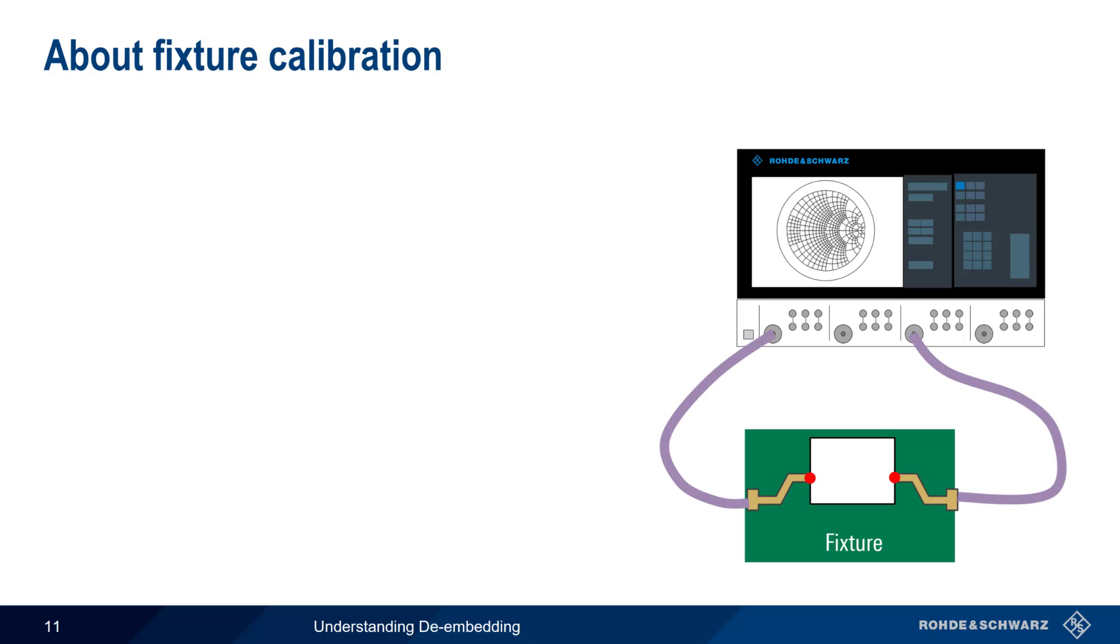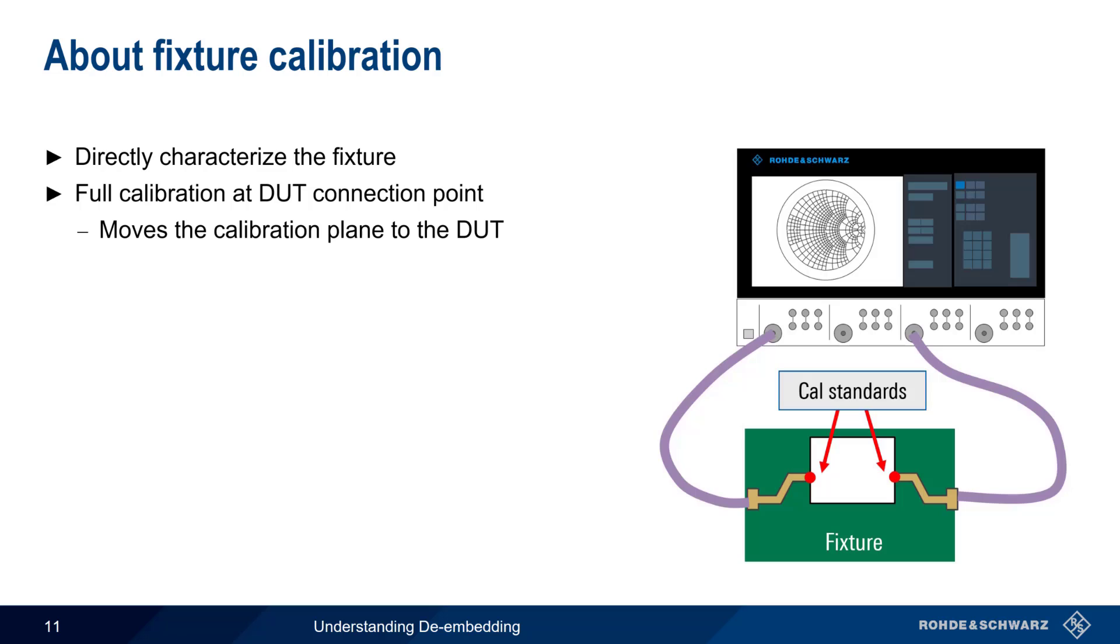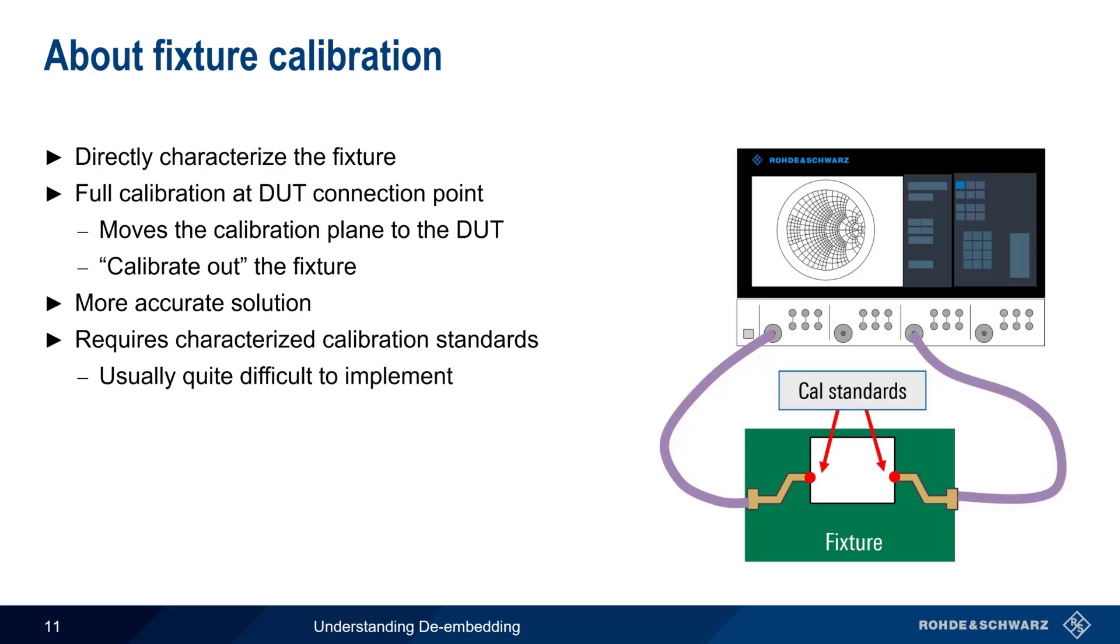Instead of modeling the fixture as an ideal or a non-ideal transmission line, we could also directly characterize the fixture, and this is often called fixture calibration. Rather than attaching a short and/or open at the DUT connection points, we perform a full calibration with a set of CAL standards. This moves the calibration plane directly to the DUT inputs and allows us to calibrate out the fixture. Since we're actually measuring the fixture, fixture calibration is more accurate than the previously mentioned methodologies. Fixture calibration does, however, require characterized calibration standards, and these are often quite difficult to implement.